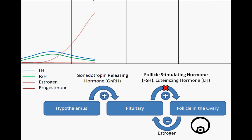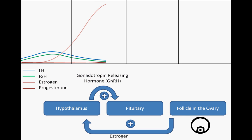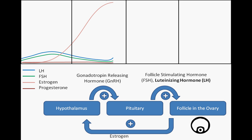As the follicle continues to develop, estrogen levels will continue to rise. This dramatic increase in estrogen changes its interaction with the hypothalamus, resulting in increased release of GnRH and a subsequently rapid rise in LH and FSH from the pituitary. The rise of these gonadotropins, and LH in particular, stimulates the developing follicle to release an egg from the ovary, an event known as ovulation.